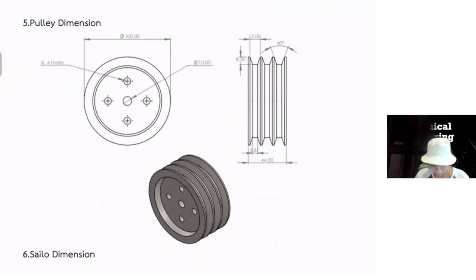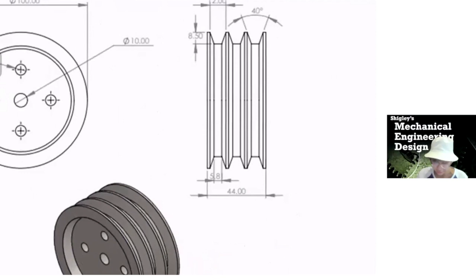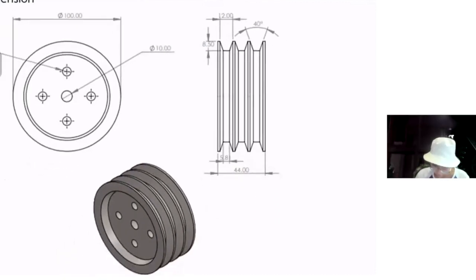This is the pulley dimension. It has diameter of 100 mm. It has 8 mm for holes. And it has a 10 mm for the middle hole. This is the size dimensional of the pulley. It has the width of 20 mm per belt. And it has 3 belts. This belt has a 40 degree angular contact.